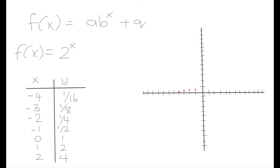When x = 0, y = 1 — so this is going to be our y-intercept. When x = 1, y = 2, so that's a point over here. When x = 2, y = 4, so that's a point over here. And just to show how the graph changes on the positive side, when x = 3, y = 8.